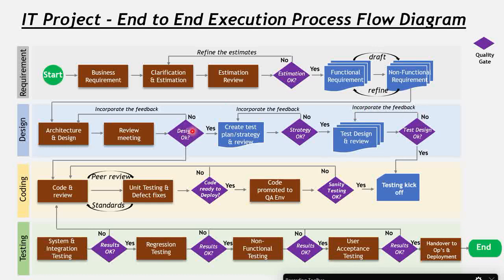On the development side, when the design is okay, the team starts with coding, unit testing, and defect fixes in an iterative process. A peer review follows — the code is reviewed by peers, leads, and technical excellence staff, and they must comply with the standards defined in the project. Once the code is ready to deploy, there is a deployment checklist to verify that unit testing is done, defects are closed, and standards are followed — another quality checkpoint.